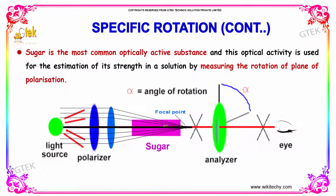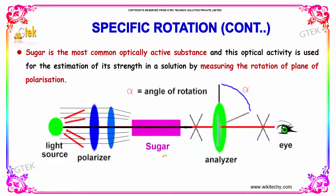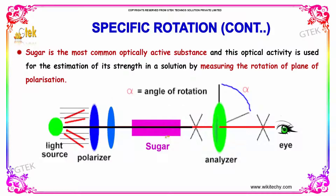Sugar is the most common optically active substance, and this optical activity is used for the estimation of its strength in a solution by measuring the rotation of the plane of polarization.